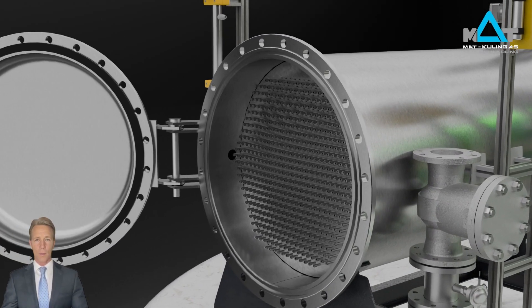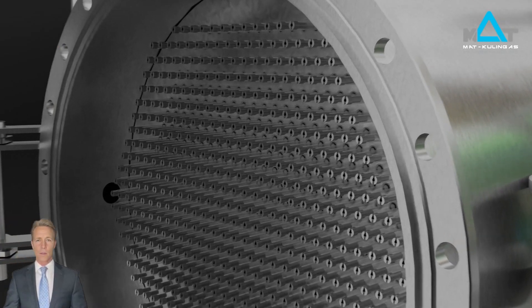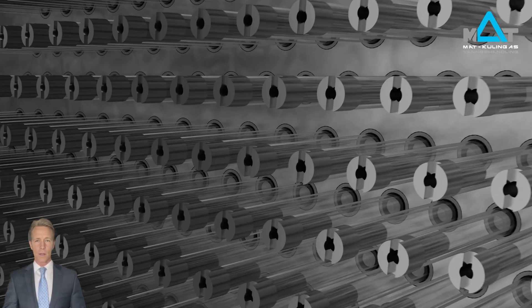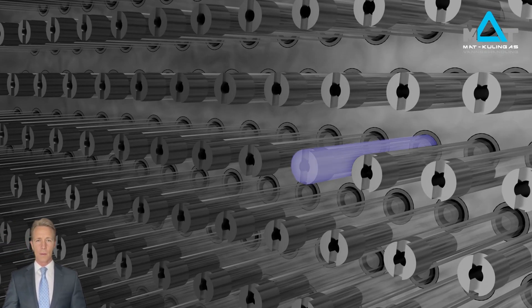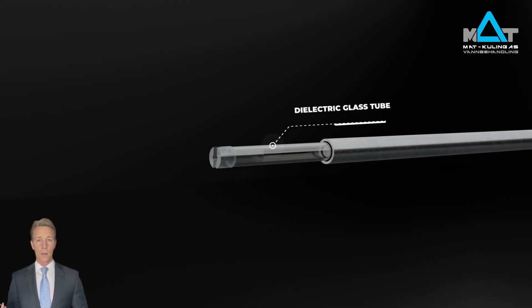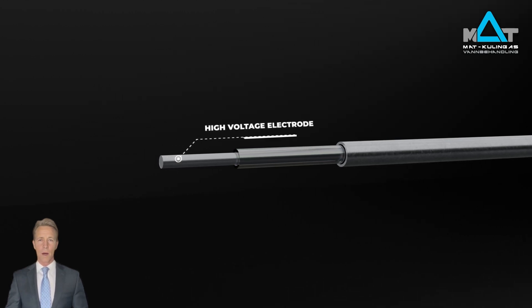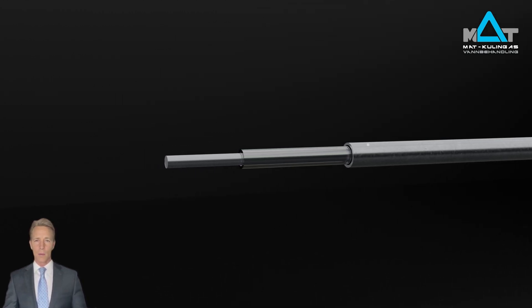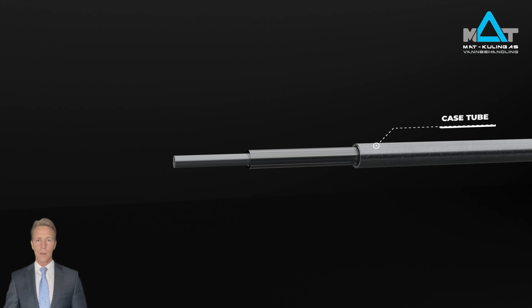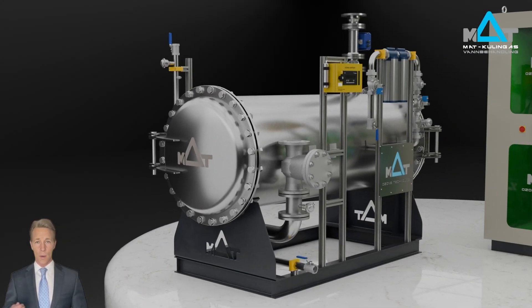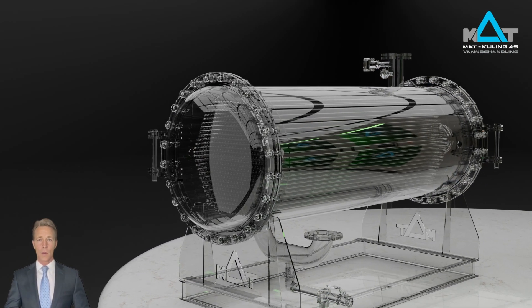The core of the process happens inside specialized components like the electrodes and dielectric glass tubes you see here. As oxygen flows between the electrodes, high-voltage electrical discharges are generated—think of it as controlled mini lightning. This powerful electrical energy, guided by the dielectric glass, breaks the strong bond in the oxygen molecules, splitting them into individual, highly reactive oxygen atoms.